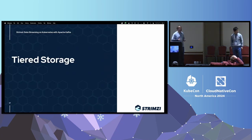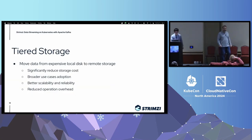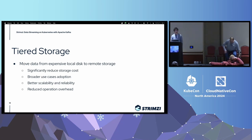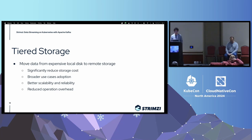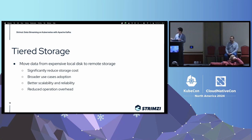The next feature to talk about is tiered storage. In the past several years the Kafka community worked very hard to design and implement this feature in Apache Kafka, and it was finally released in Kafka 3.6. Today many people are already using it in production. The first main benefit is it can significantly reduce storage cost because cloud storage is generally much cheaper compared to local or remote block devices.